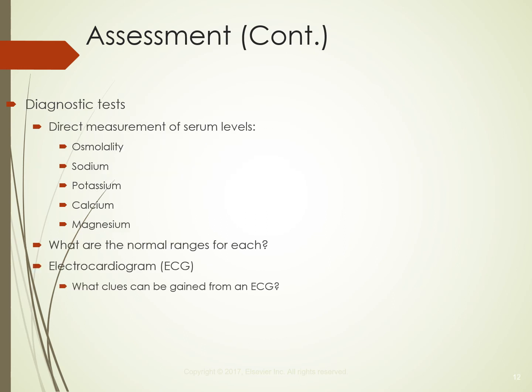Direct measurements of serum levels are covered on page 70. Normal ranges: potassium is 3.5 to 5.0, sodium is 135 to 145, and magnesium is 1.3 to 2.1. EKGs can show changes from electrolyte imbalances, especially with potassium levels — an inverted U wave at the end of the QRST complex indicates an imbalance.